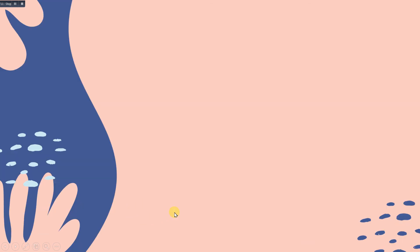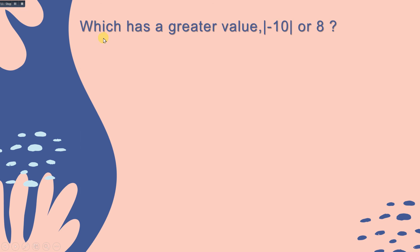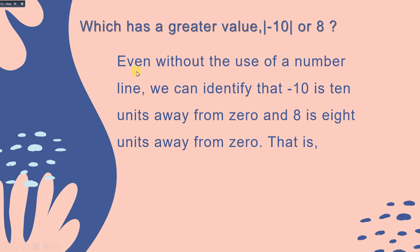Next question: which has a greater value — the absolute value of negative 10 or 8? Even without a number line, we can identify that negative 10 is 10 units away from 0, and 8 is 8 units away from 0. So the absolute value of negative 10 is 10 and the absolute value of 8 is 8. Therefore, the greater distance from 0 is 10.